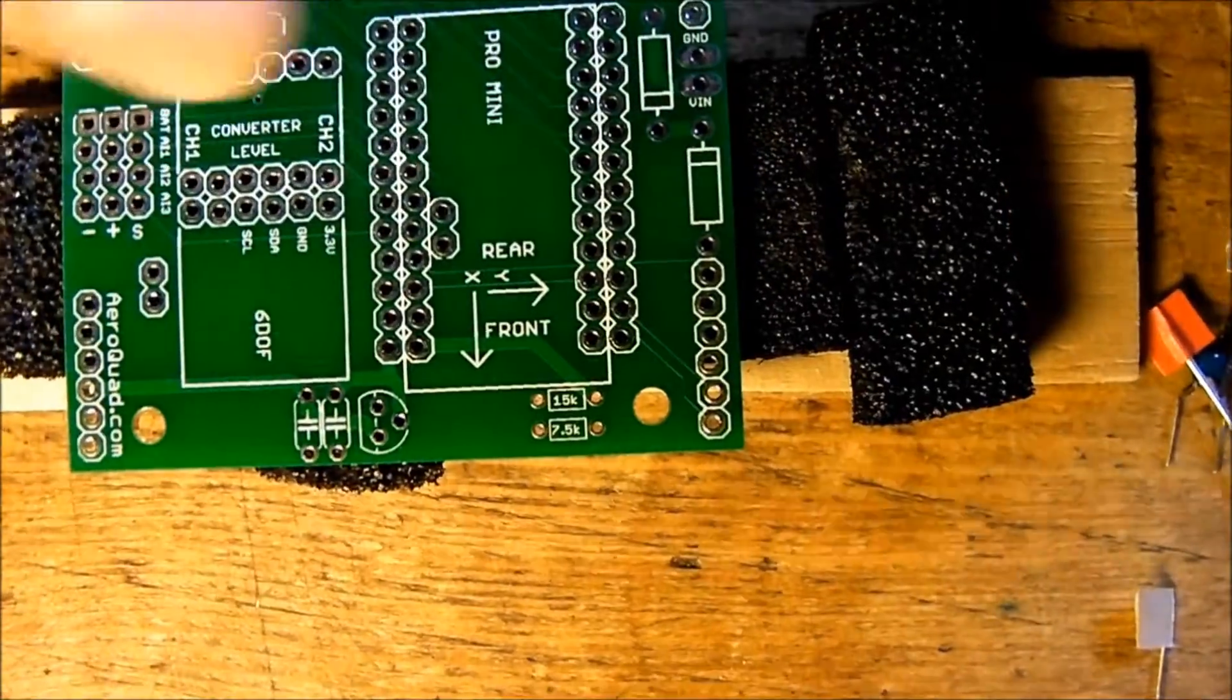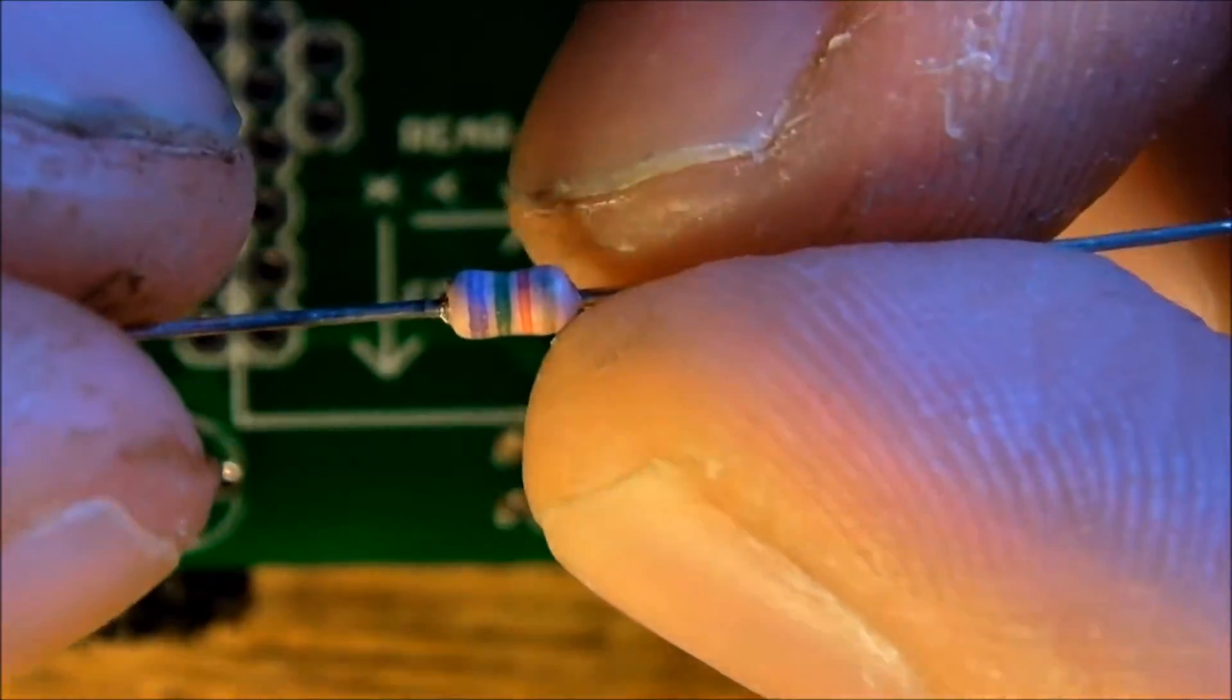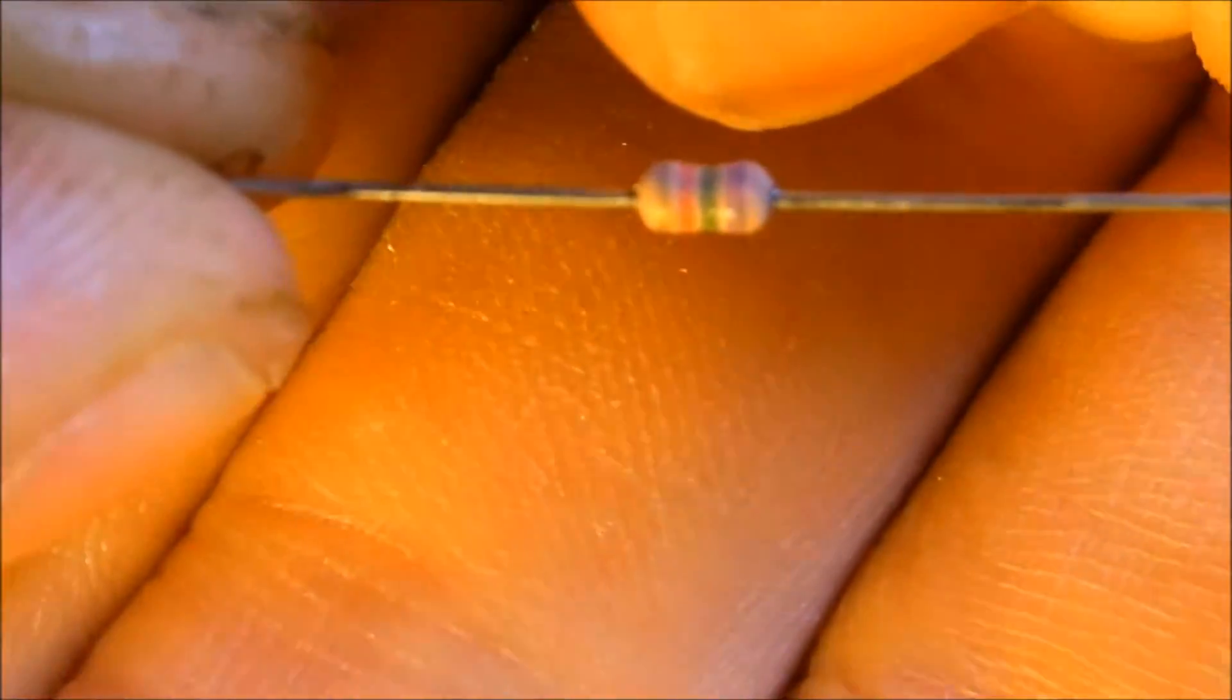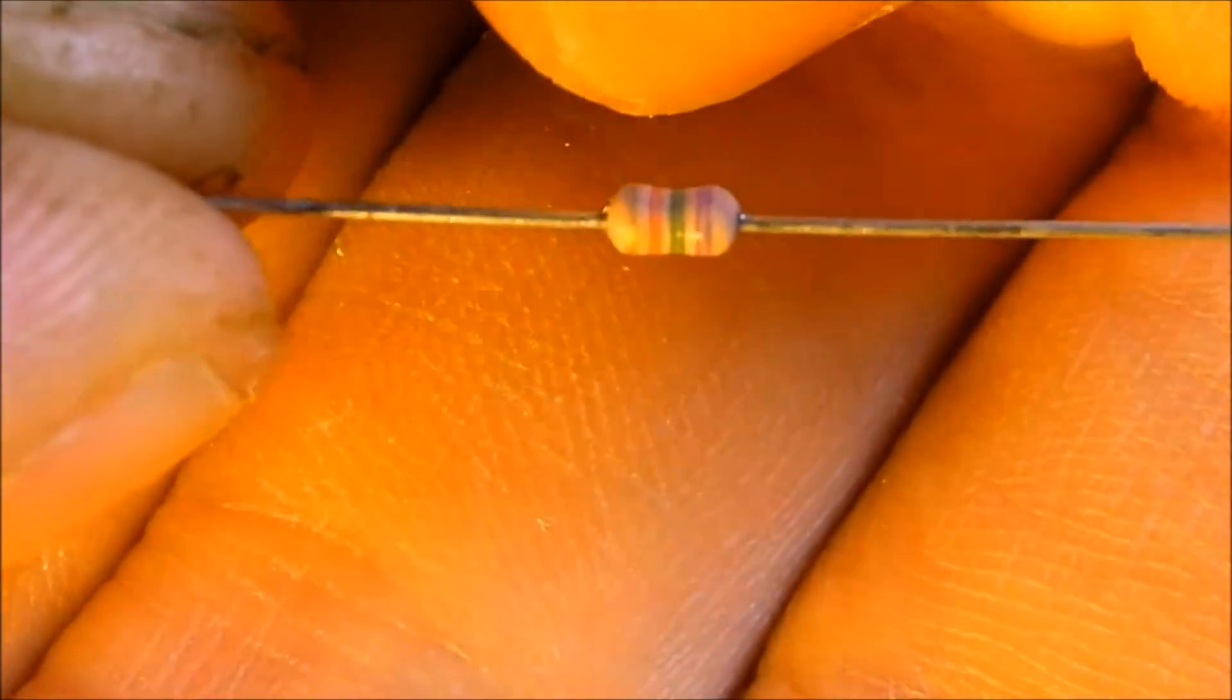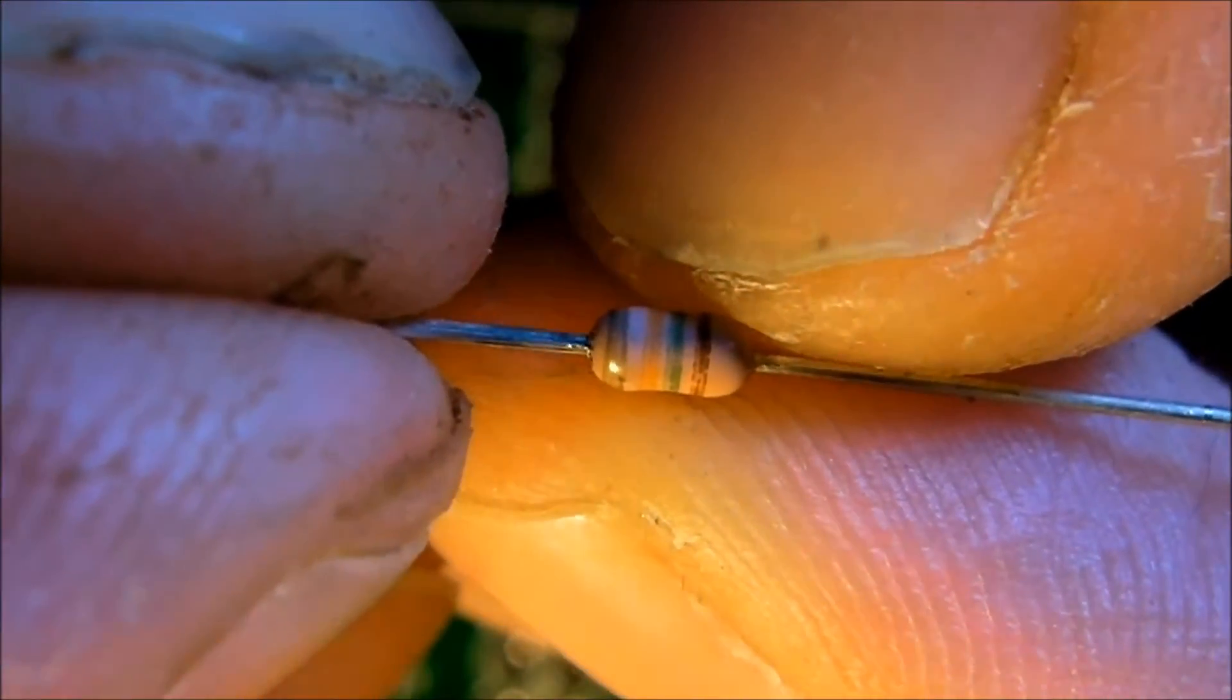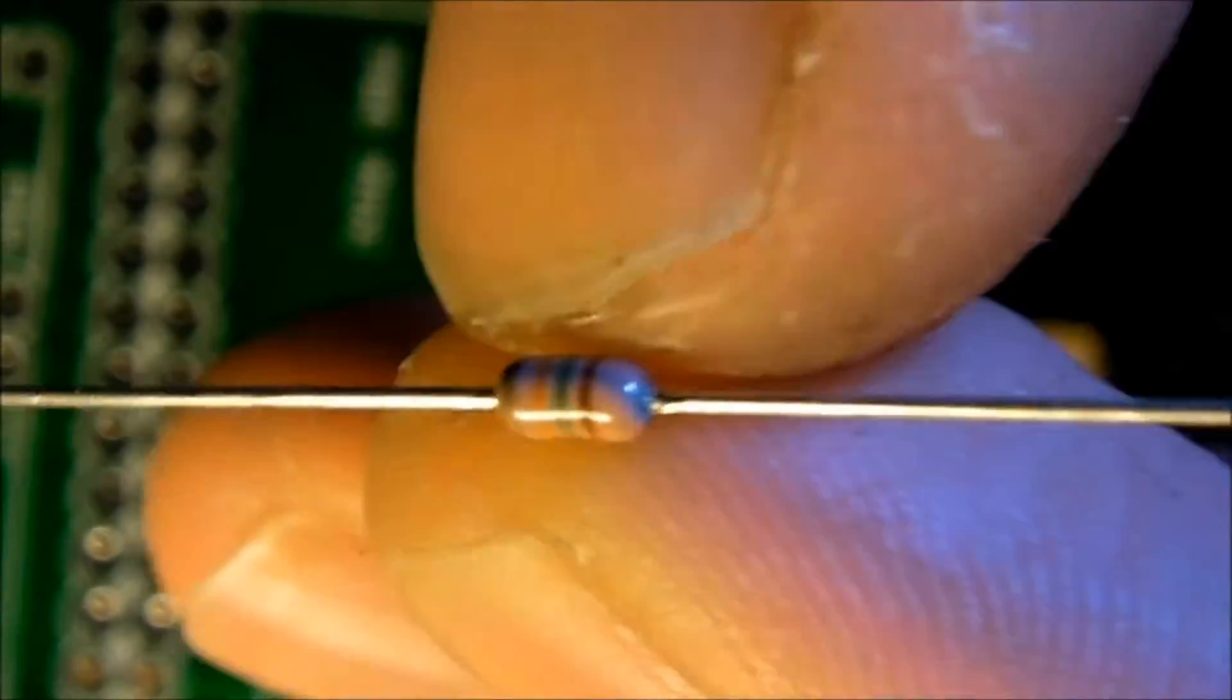Now we will assemble the mini shield. They are supposed to go in here, 15k and 7k5. This resistor is a 7k5. I see that because it's purple, that's seven, it's green, that's five, and it's two, so it's two zeros. Seven, five, two zeros, 7500 ohms. We're going to install the 15k which is one for brown and five and three, so it's one, five, and three zeros.